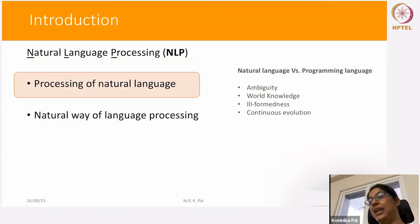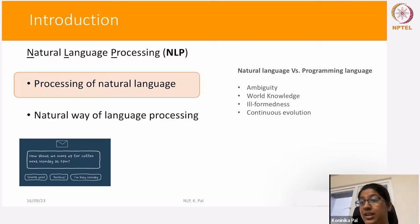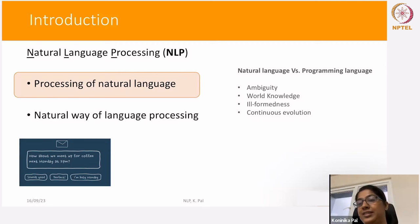Let's see what are the applications of this processing of language. We use very different applications every day which actually require processing of natural language. For example, consider mail services — many of us use Gmail, Yahoo, or Hotmail. Many of these mail services come up with recommendations for replies. They have to process whatever mail a particular person has received, understand the mail, and then generate a feasible and correct valid response as a suggestion.